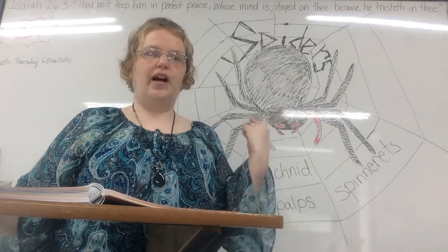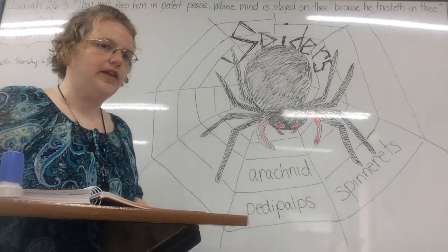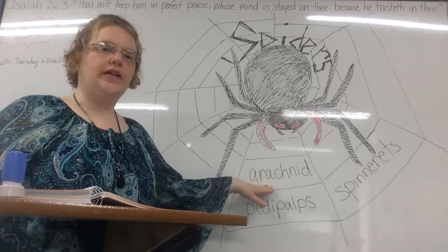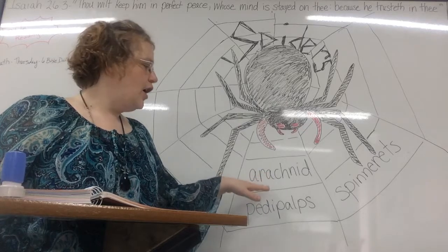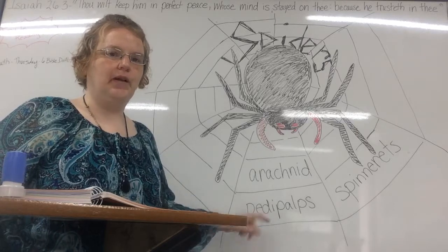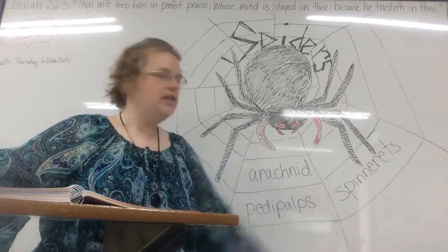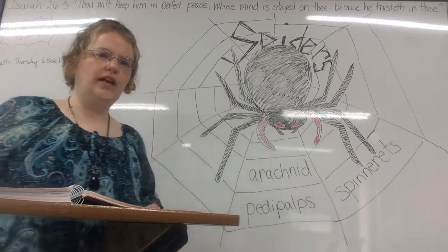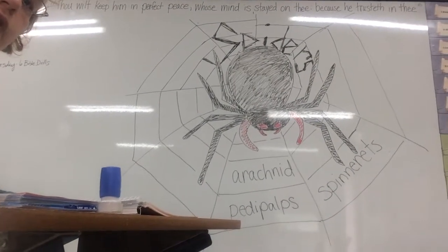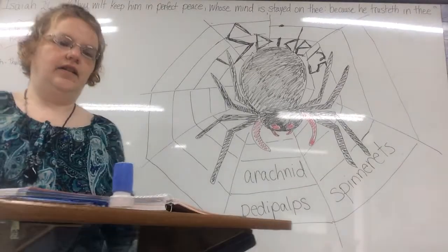Let's get right into our lesson and talk about the parts of a spider. Before we start reading, I have some vocabulary words on the web of our spider. The first word is 'arachnid.' The second is 'pedipalps.' And the third vocabulary word is 'spinnerets.'